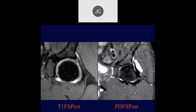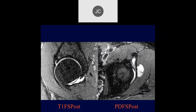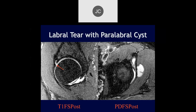Robert — looking at the superior labrum, there's irregularity on the left-sided image, and there's a paralabral cyst extending superiorly on the right. You can actually see the fluid going through the tear into the paralabral cyst, which then extends anteriorly with a large adjacent cyst. With a cyst, you can feel very comfortable that you're dealing with an actual tear.